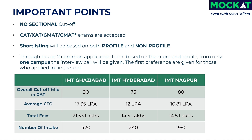For IMT Hyderabad, the expected CAT cutoff is 75 percentile, average CTC is 12 LPA, total fees is 14.5 lakhs, and the number of intake is 240 students. For IMT Nagpur, the expected CAT cutoff is 80-plus percentile, average CTC is 10.81 LPA, total fees is 14.5 lakhs, and the number of intake is 360 students.